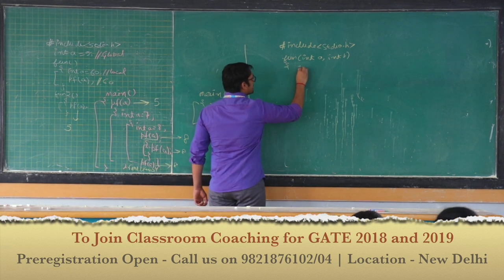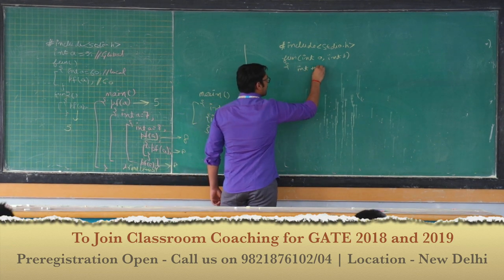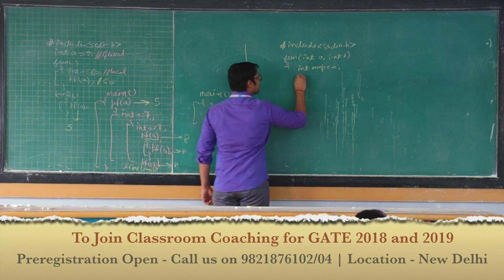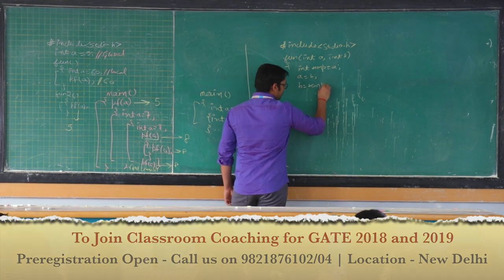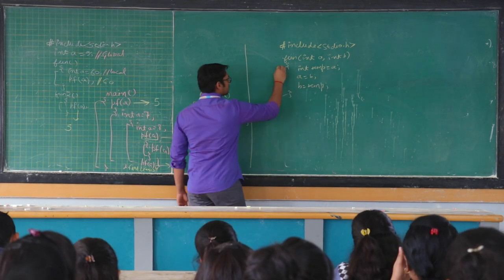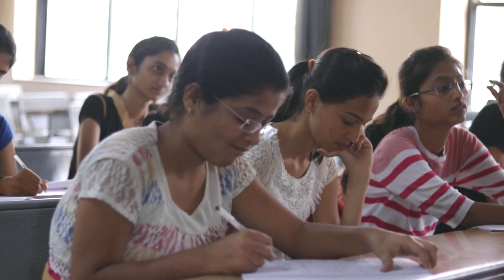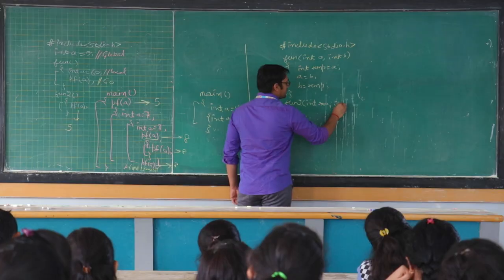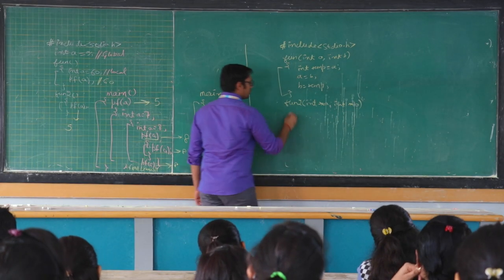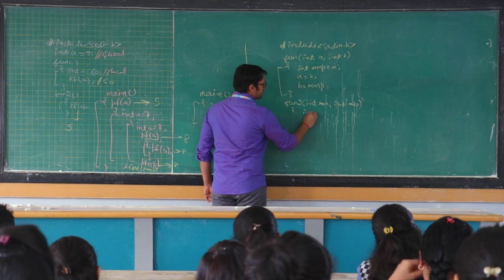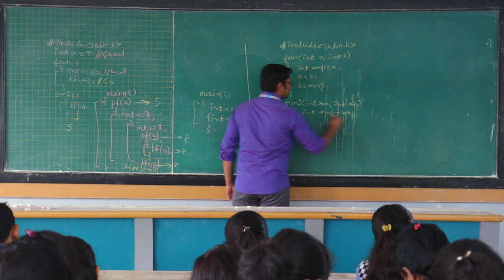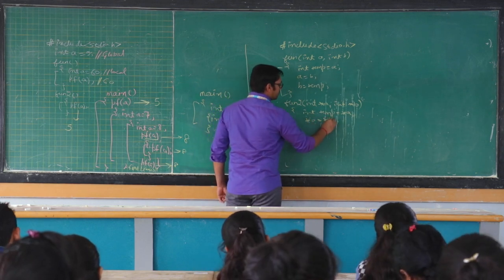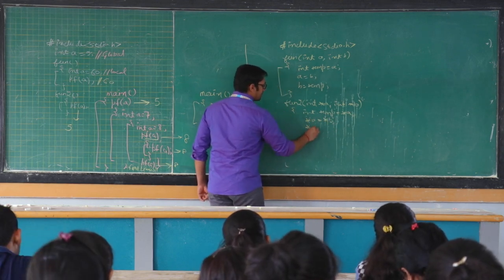Now, if I am doing integer temp equal to a, a equal to b, and b equal to temp. Then we have a function 'fun2' taking integer star a, integer star b. Then we have integer temp equal to star a, star a equal to star b, and then star b equal to temp.